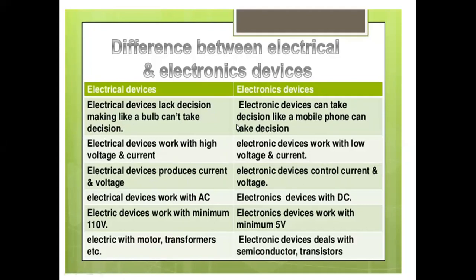Electrical devices can't take decisions directly, but electronic devices — like mobile phones — can take decisions directly. In the market, there are various advanced mobile phones available, which are part of electronic devices. Then I explained the voltage and current parameter: electrical devices work with high voltage and high current, but electronic devices work with low voltage and low current. I told you what is voltage, what is current, what is unit of voltage, and what is unit of current.